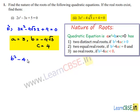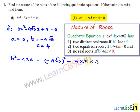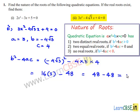The discriminant b² - 4ac = (-4√3)² - 4 × 3 × 4. So (-4)² = 16 and (√3)² = 3, giving 16 × 3 = 48, and 4 × 3 × 4 = 48. Therefore b² - 4ac = 48 - 48 = 0.